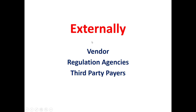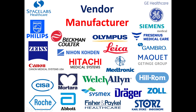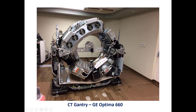Clinical engineers should also communicate with vendors, regulation agencies, and third-party payers. The vendor is a representative of a manufacturer. As seen in this slide, we have a collection of well-known manufacturers such as Siemens, Philips, GE, Beckman Coulter, and Olympus. The relationship with the vendor starts when the clinical engineering department makes a request to purchase a medical device, and develops during the installation of the device.